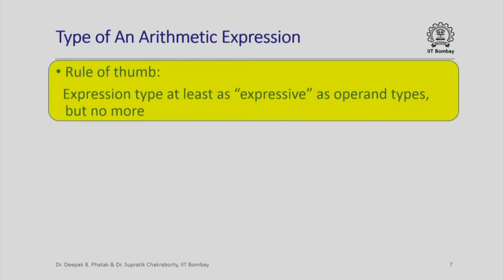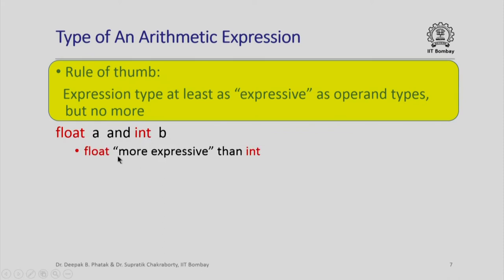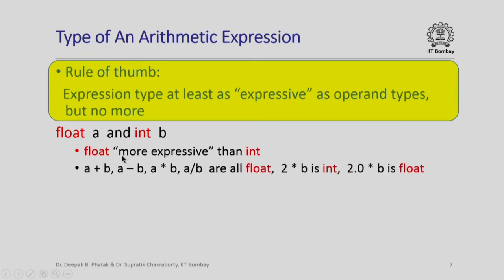A general rule of thumb for determining the type of an arithmetic expression is that the type of the expression must be at least as expressive as the types of the various operands, and no more. For example, if A is float and B is int, float is more expressive than int because we can represent all integer values as floating-point numbers but not necessarily the reverse. So for expressions like A plus B, A minus B, A star B, A divided by B — where one operand is float and the other is int — the type of the expression will be float.